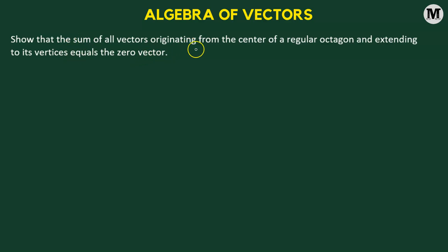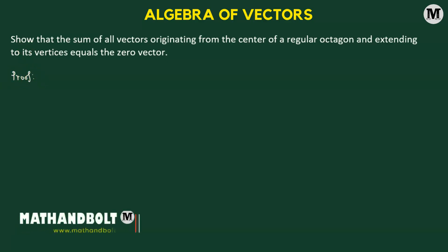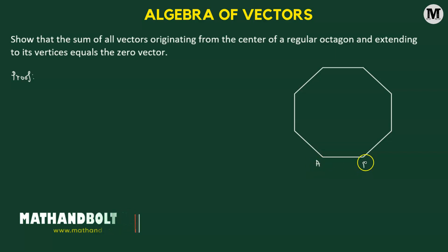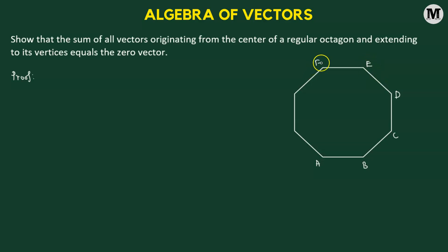We need to show that the sum of all vectors originating from the center of a regular octagon and extending to its vertices equals the zero vector. Let us begin. We will consider an octagon — let's name it A, B, C, D, E, F, G, and H — and consider the center as O.